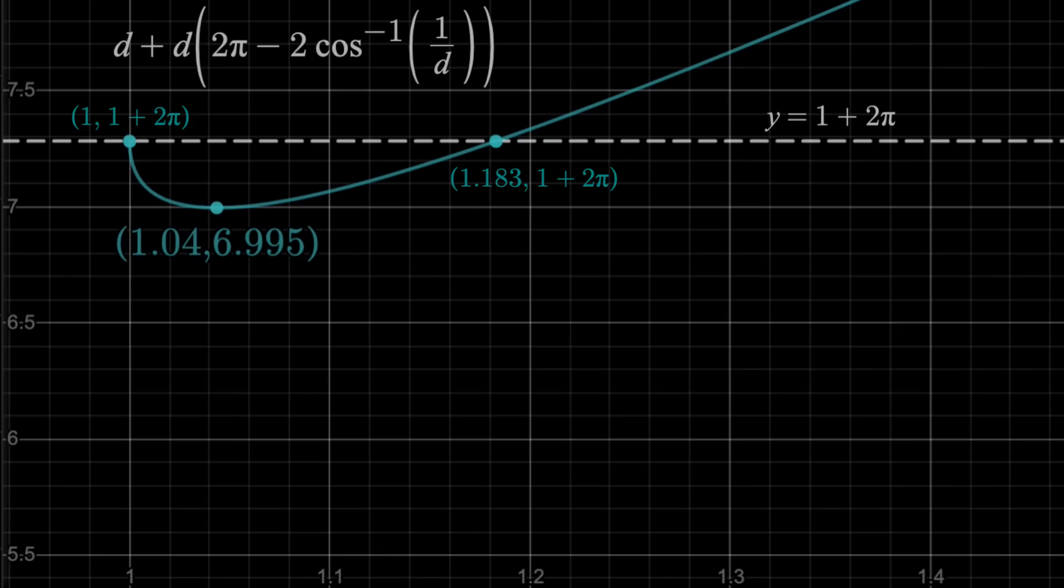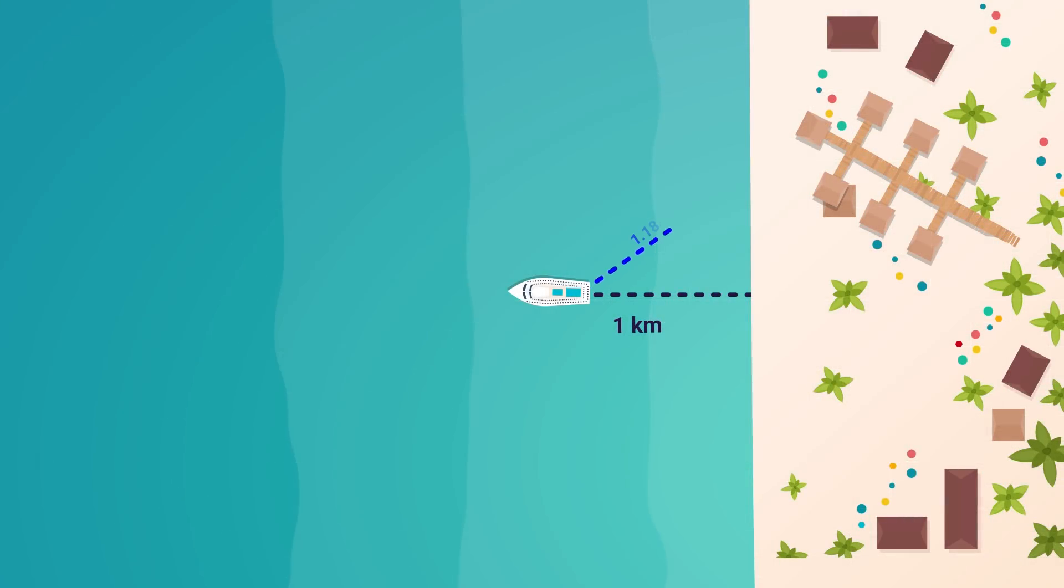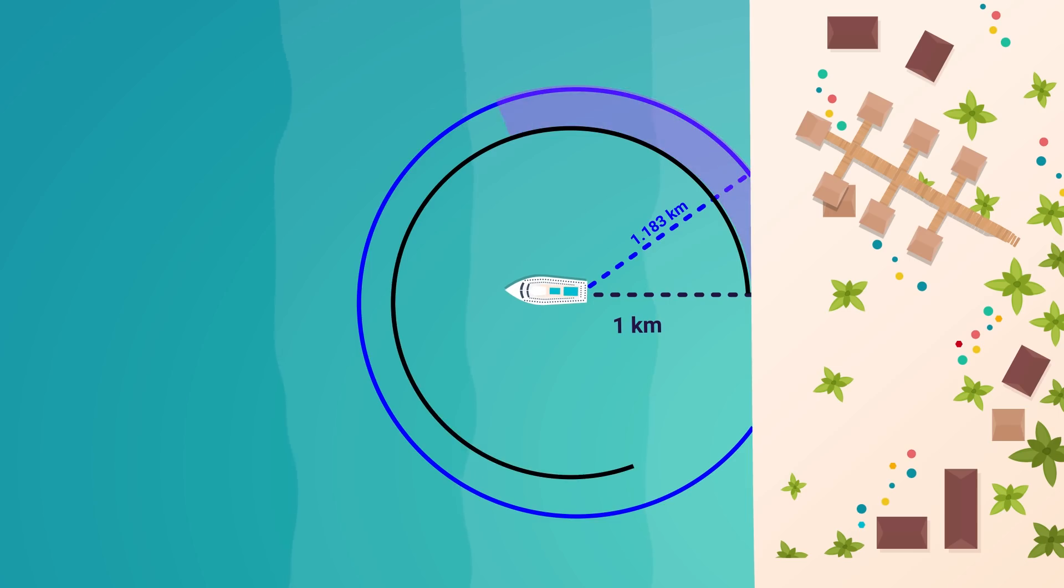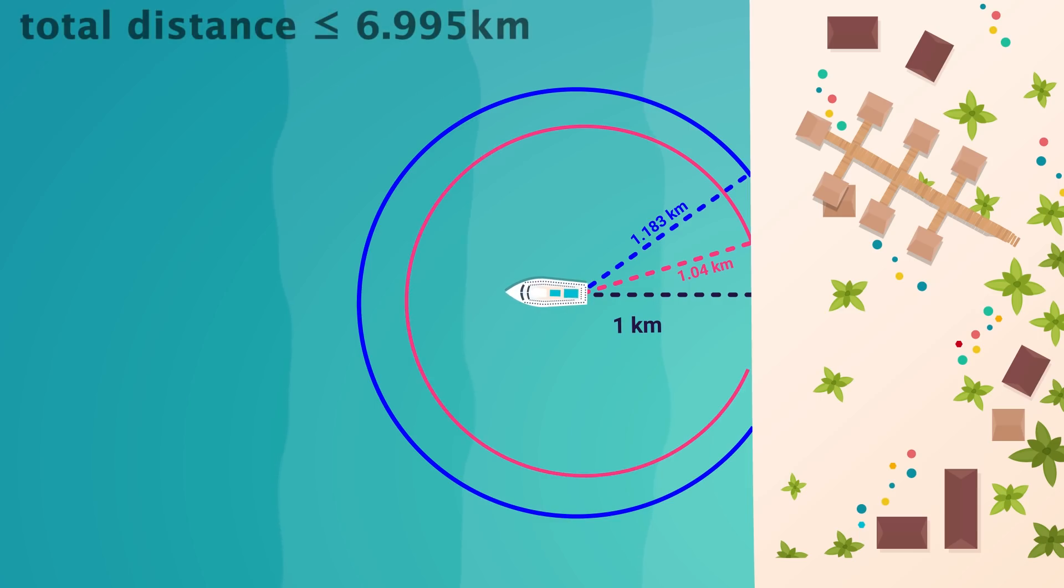So we can drive anywhere between 1 and 1.183 kilometers at first, and then in a circle, and do better than the previous method. But 1.04 kilometers is the actual minimum, where you would drive guaranteed 6.995 kilometers or less. And compared to the 1 plus 2 pi, or roughly 7.28 kilometers, you're saving just over a quarter of a kilometer in the worst case scenario. So there you go, that's the solution.